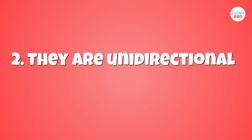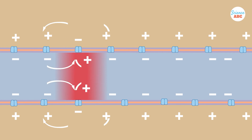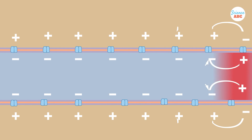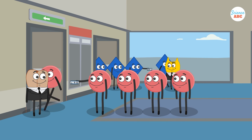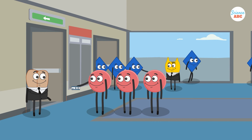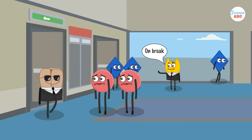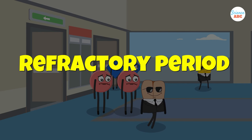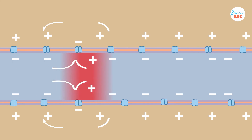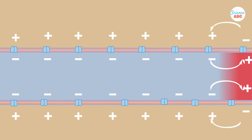Second, they are unidirectional. Once a segment of the membrane becomes depolarized, it passes the signal forward to the next segment. Ion channels, after finishing their job of passing the signal, will pull down their shutters and take a break, becoming inactive for a short while. This is called their refractory period. Therefore, a signal cannot return to them and has no choice but to travel forward to the next segment on the membrane.